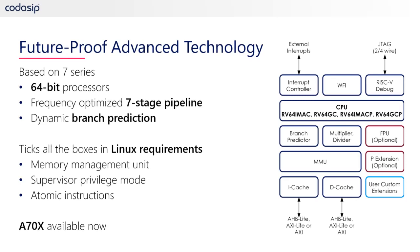We have already released the first core from this series in November. This processor is called the A70X. We also recognize that some customers are additionally seeking enhanced DSP performance and multiprocessing solutions. This is why we recently announced three additional application processor cores which will be released in the new year. The A70X is the starting point for our application processor offering, which will grow over the coming years.